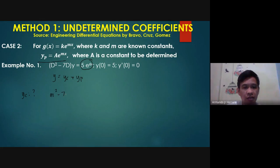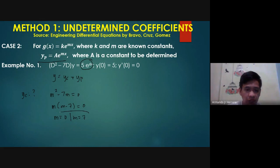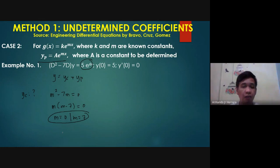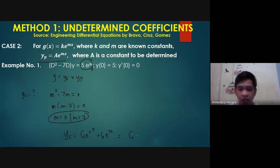So that's m squared minus 7m equals 0. Then m times the quantity m minus 7 equals 0 as factors. So m equals 0 and m equals 7. These are distinct real roots, so yc is equal to c1 plus c2e to the 7x.